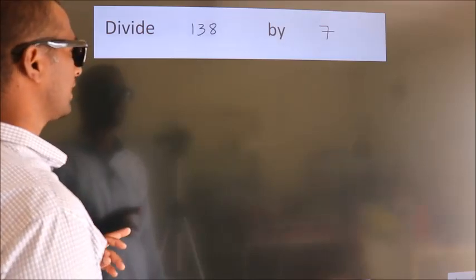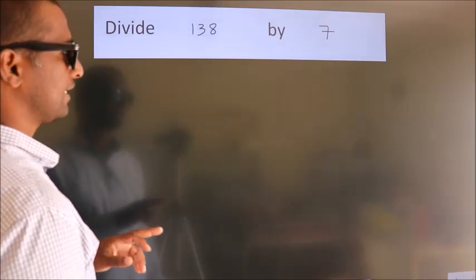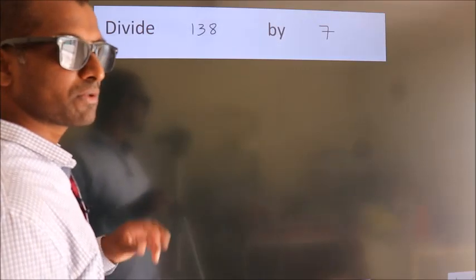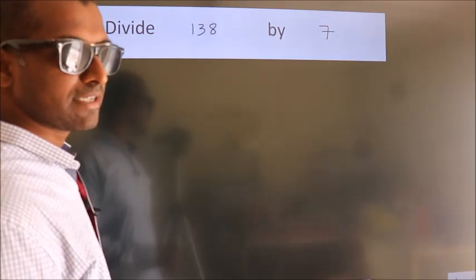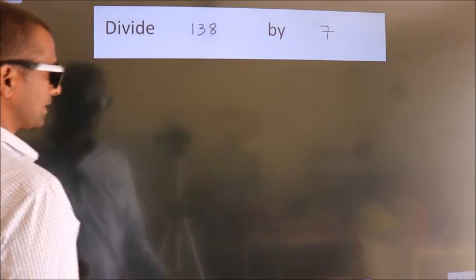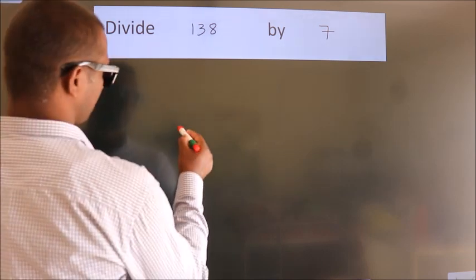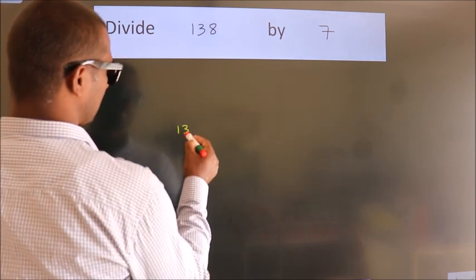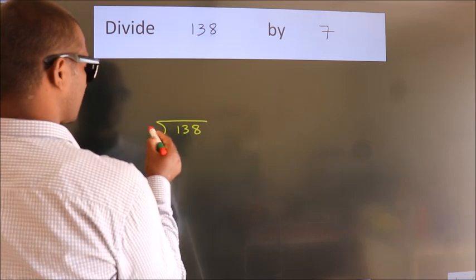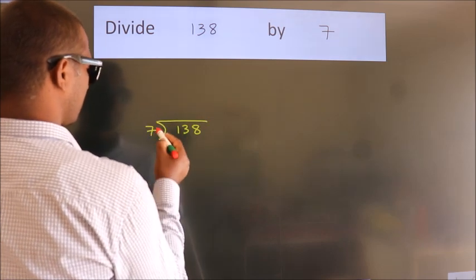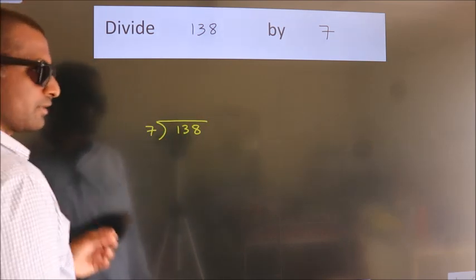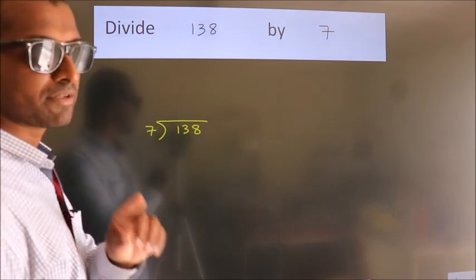Divide 138 by 7. To do this division, we should frame it in this way: 138 here, 7 here. This is your step 1.